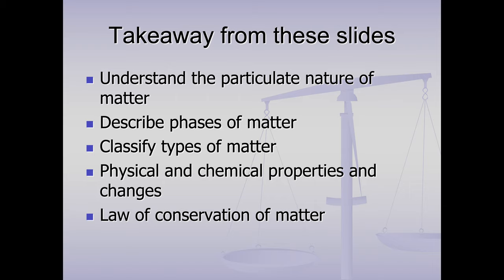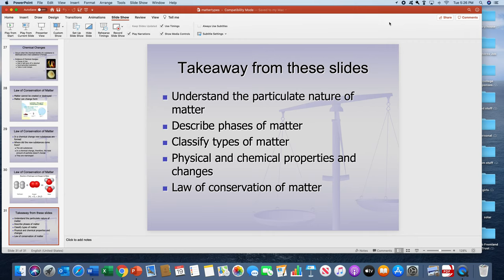So this is the takeaway from these slides. You should understand the particulate nature of matter. We'll describe the phases of matter, not only solids, liquids, and gases, but in terms of kinetic theory, and answer why can a liquid change its shape and a solid cannot, for example. Talk about the types of matter, meaning mixtures, pure substances, elements, compounds, and then physical and chemical properties, physical and chemical changes, and the law of conservation of matter. At this point, between these two sets of slides, you should be able to do homework number one, which is the next thing in this module. And you guys know how to reach me if you have questions.